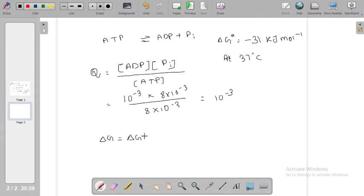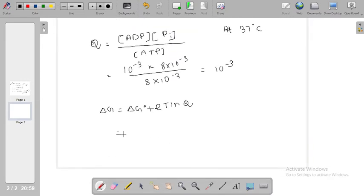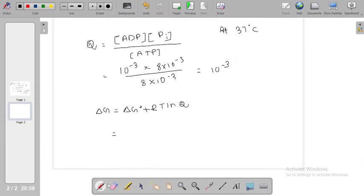Now we need to find ΔG under this condition. We know that ΔG equals ΔG° plus RT ln Q. ΔG° is minus 31 kilojoule per mole.